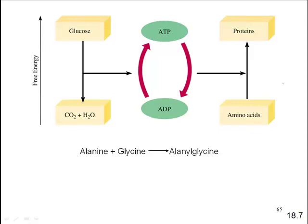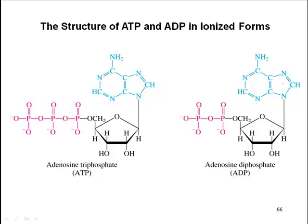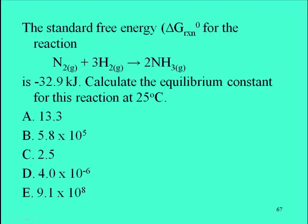Here's another example of free energy for biology. Positive 29 kilojoules. K is less than 1. That's how ATP with alanine glycine in water gets ADP with phosphoric acid and alanine glycine. This reaction here is negative 2 kilojoules. K is greater than 1 but favors the products. This is how you can get alanine glycine together using ATP. Here's the structure of ATP and ADP in ionized form. The standard free energy for the reaction is negative 32.9 kilojoules.